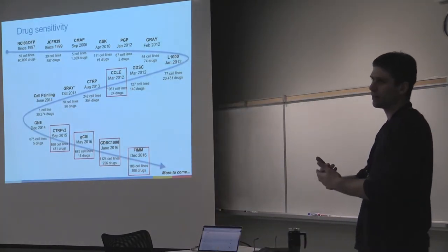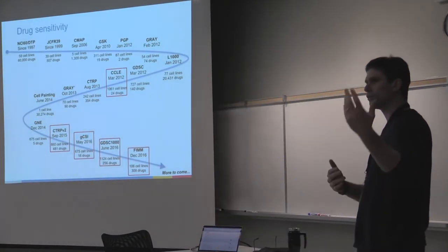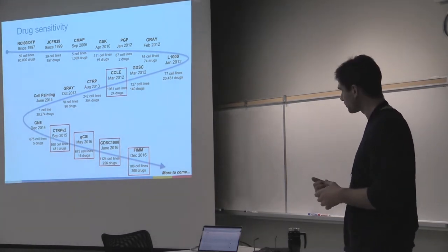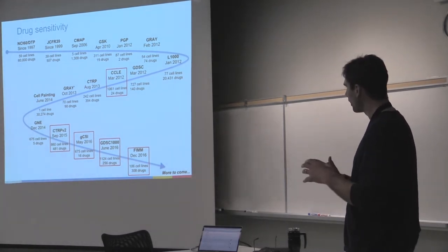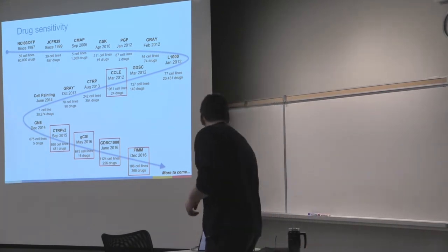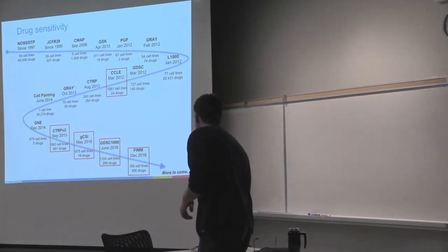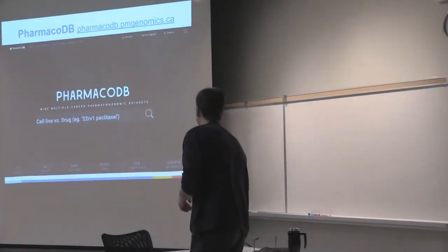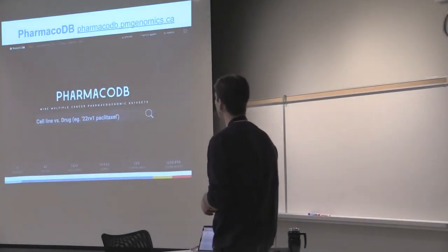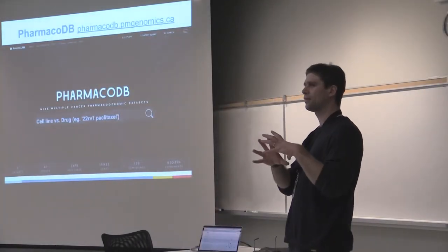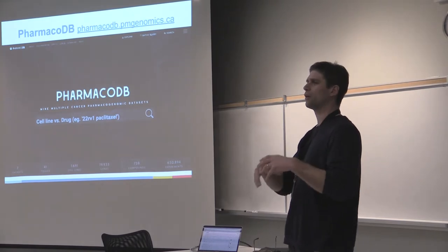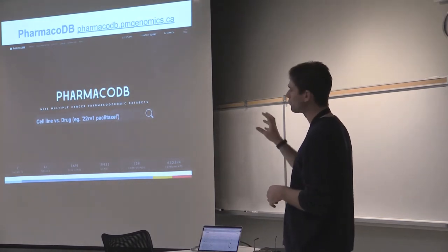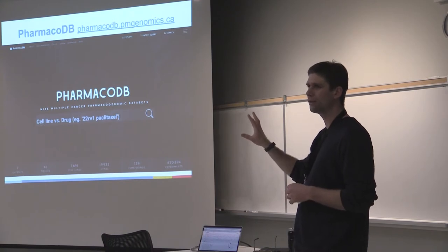The third type of data: we had drug structure, we had drug perturbation, now we're going to talk about drug sensitivity. Those datasets measure the effect of the drug on cell viability. I'll show you very briefly what PharmacoDB is doing. You can actually mine all those datasets very easily at pharmacodb.pmgenomics.ca.